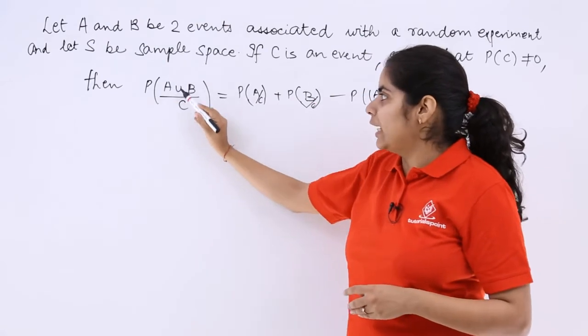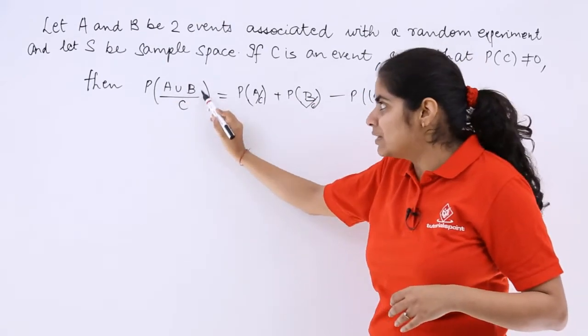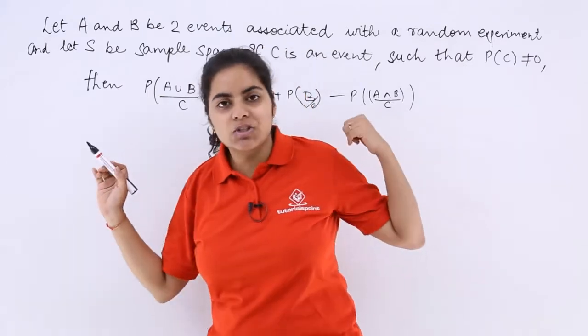First you will write probability of A upon C, then you will write probability of B with respect to C. These two you can just derive from here only.